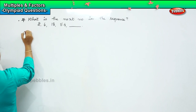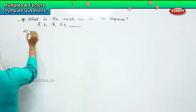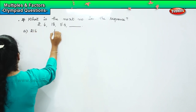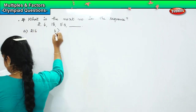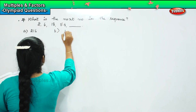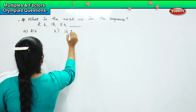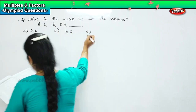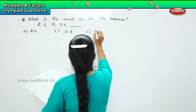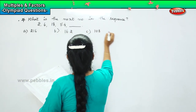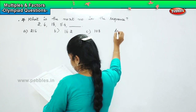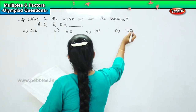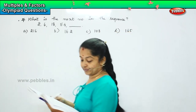The options are: Option A, 216. Option B, 162. Option C, 108. And Option D, 165.